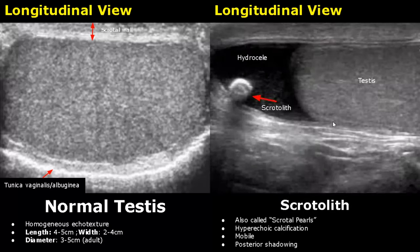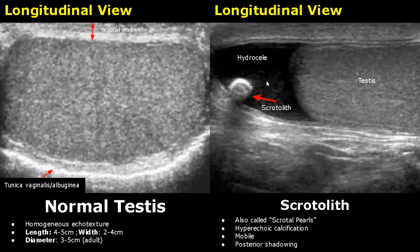A scrotolith is a calcification in the scrotal sac. It will appear hyperechoic and can be mobile. It often has posterior shadowing. In this image we can also see a hydrocele.